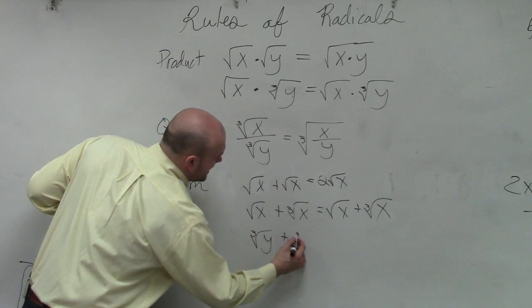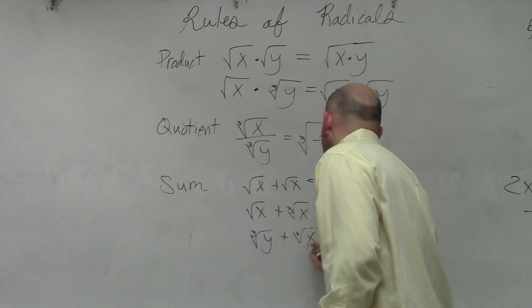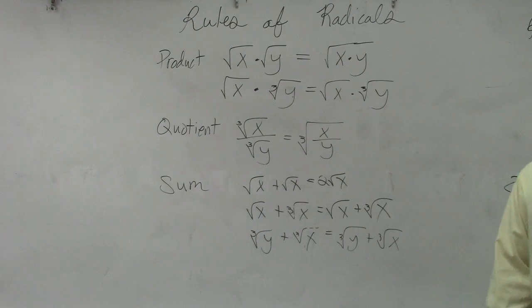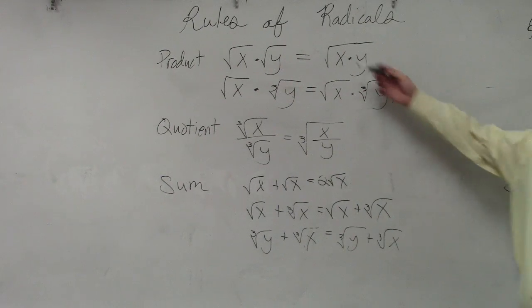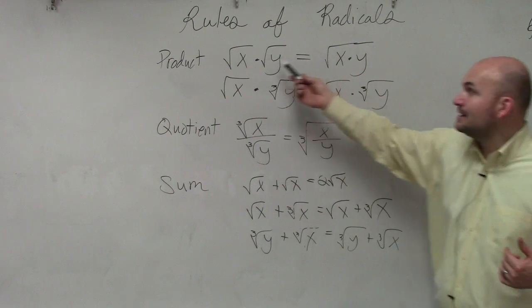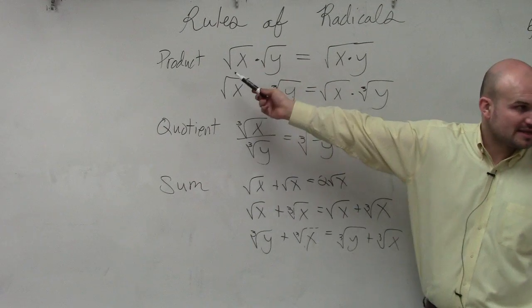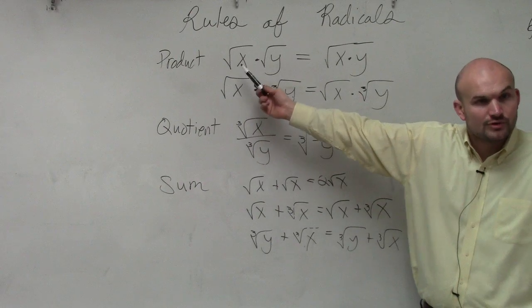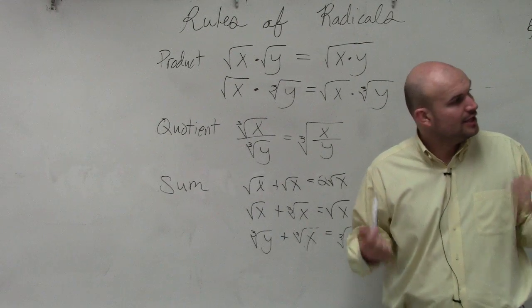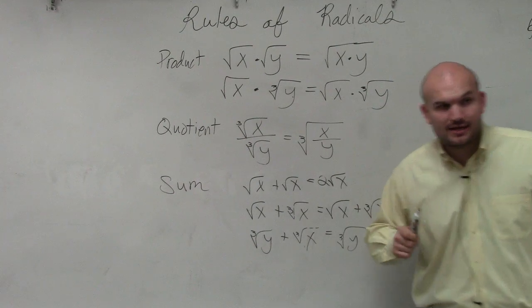If the radicands are not the same, again, you cannot combine them. So it just remains the same expression. So what I want to do is provide you guys with this because we're going to use the product rule a lot, but it's very important you understand we can only multiply when the roots are the same. And then you just multiply what's under there. The radicands don't have to be the same, just the root, what power you're taking the root of. That's for product and quotient. However, if you're going to be adding and subtracting, which we'll be doing today, you have to have the same root as well as the same radicand.